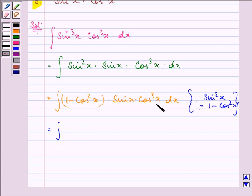And multiplying cos cube x with 1 minus cos square x, we have cos cube x minus cos to the power 5x into sine x into dx.